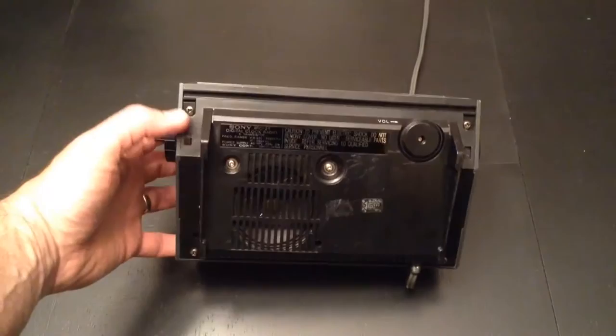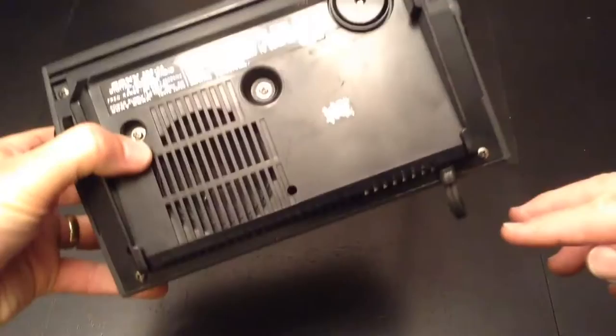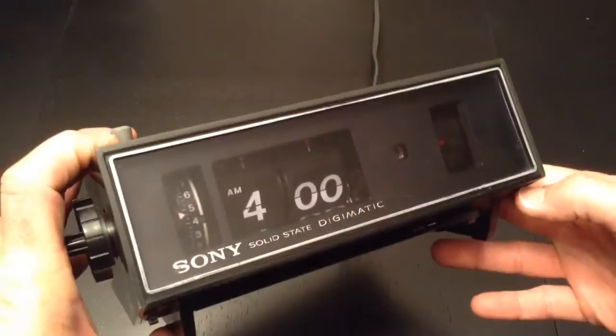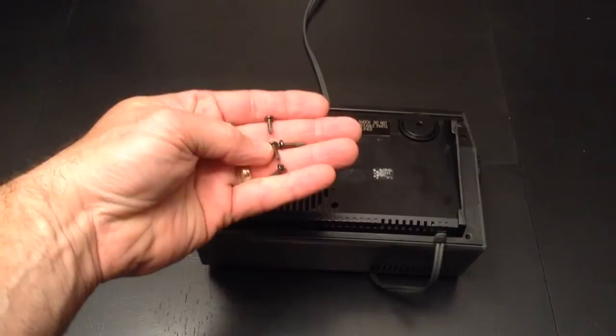Alright, disassembling begins here. We're going to remove the four screws, two in the front here, which are longer screws than the two in the back. And then we'll go ahead and remove the two motor or the clock mechanism screws.